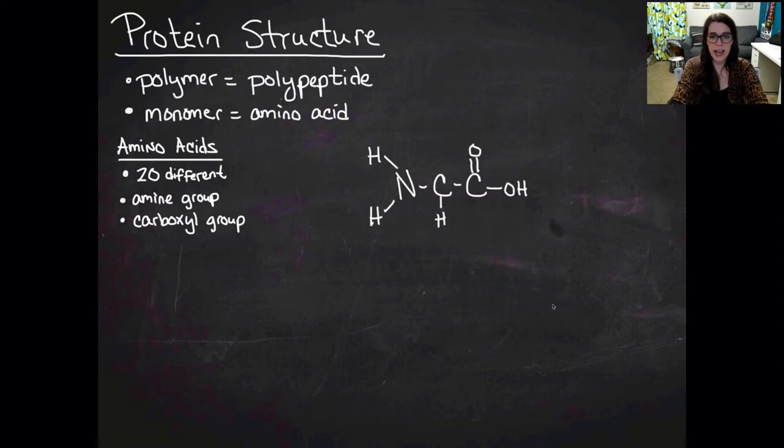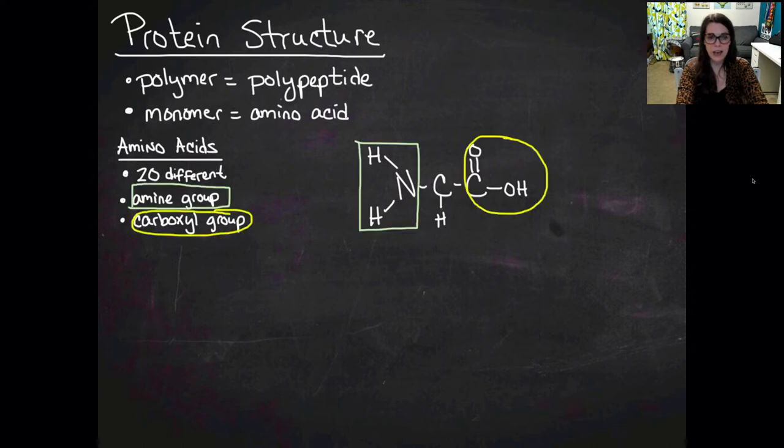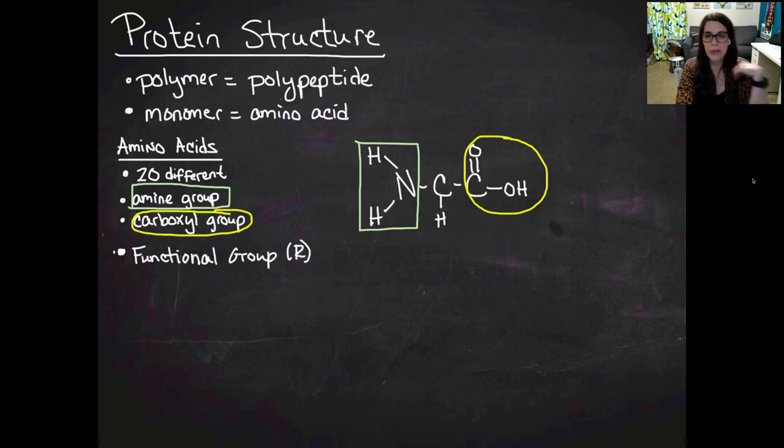So this N bound to the H2, this NH2 right there, that is your amine group. And then the COOH, that is your carboxyl group. You don't really need to know that. You just need to recognize that that's an amino acid. And then they are also going to have a functional group. And the functional group is the only thing that's different between the 20 amino acids, and that just hangs off that center carbon.